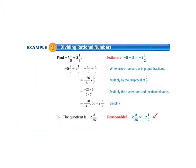Let's take a look at example 1, dividing rational numbers. We are finding the value of negative 5 and 1/5 divided by 2 and 1/3. So our first job is to estimate. We're going to do a little rounding. Negative 5 divided by 2 equals negative 2 and 1/2. Then we go back to our original problem and write the mixed numbers as improper fractions.